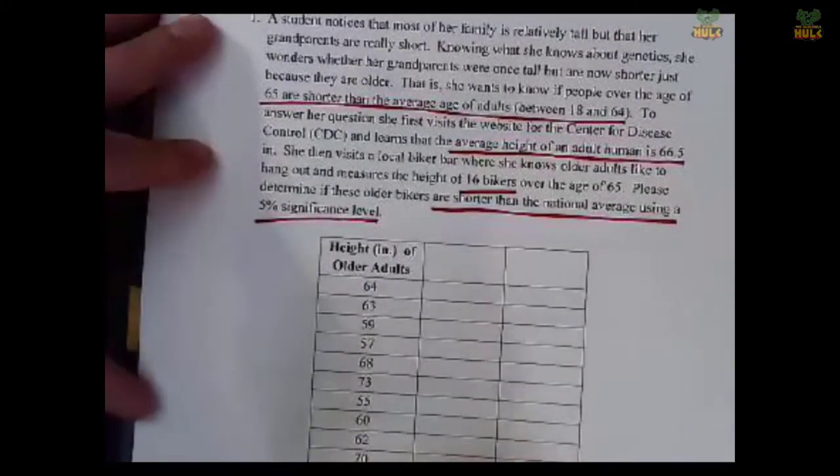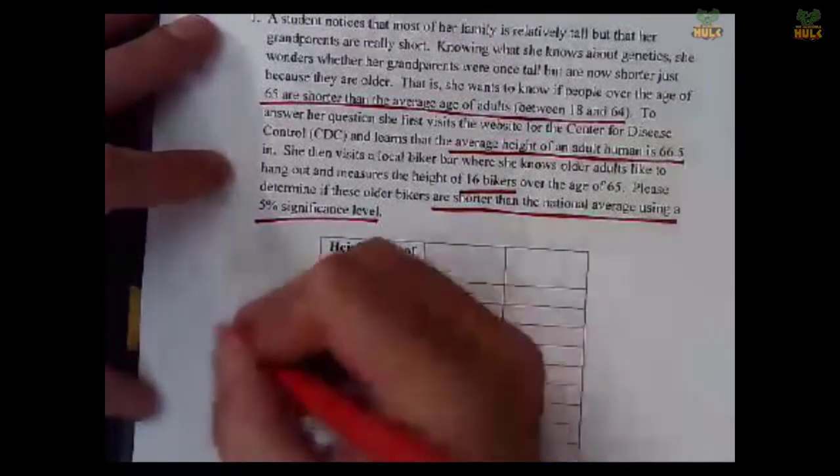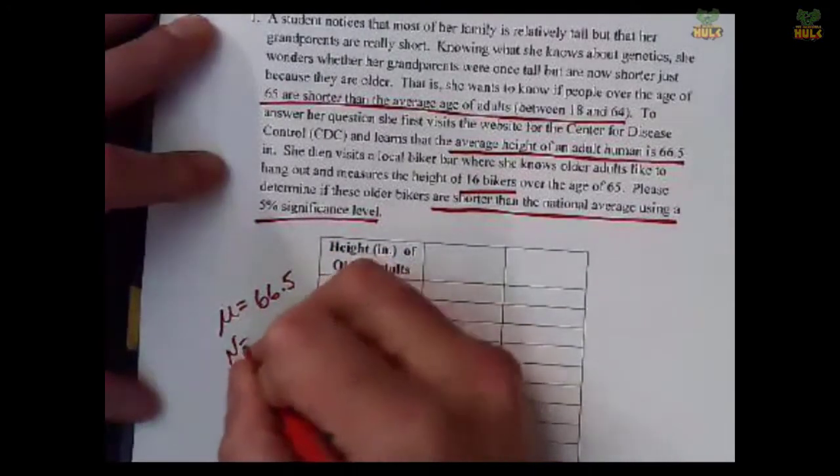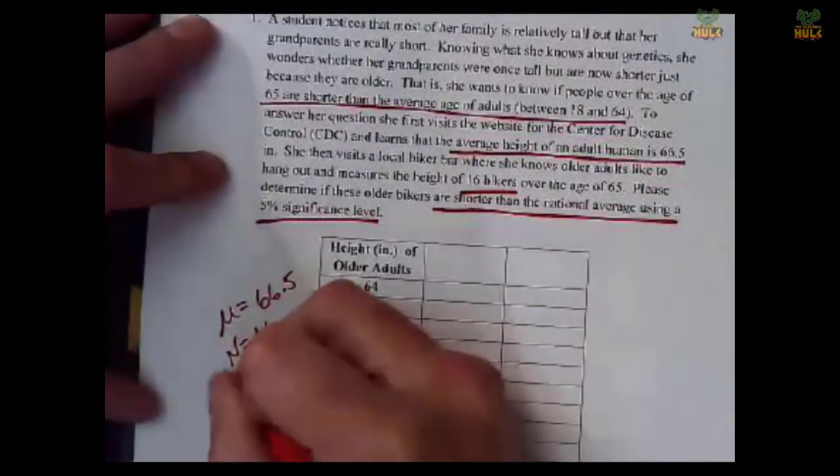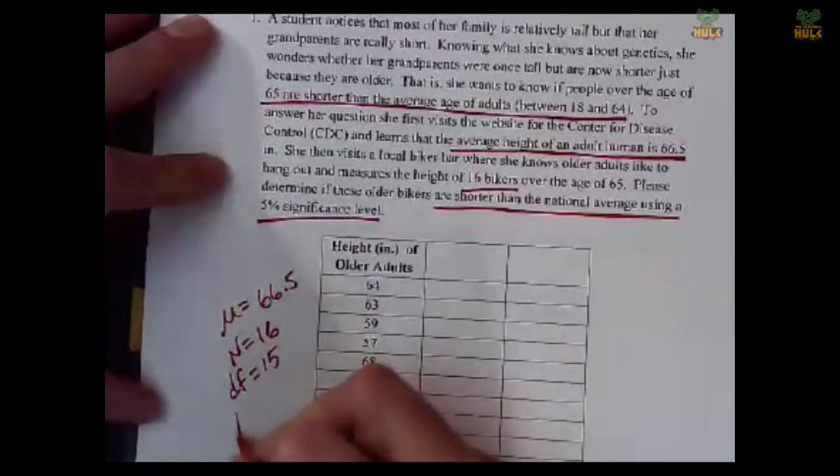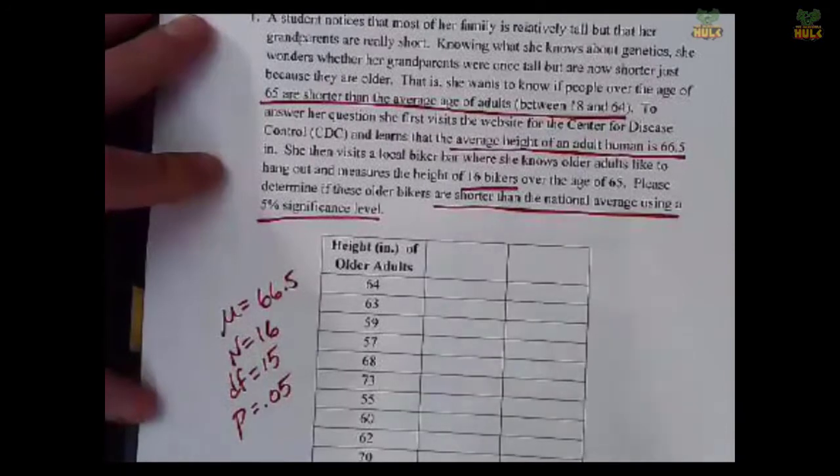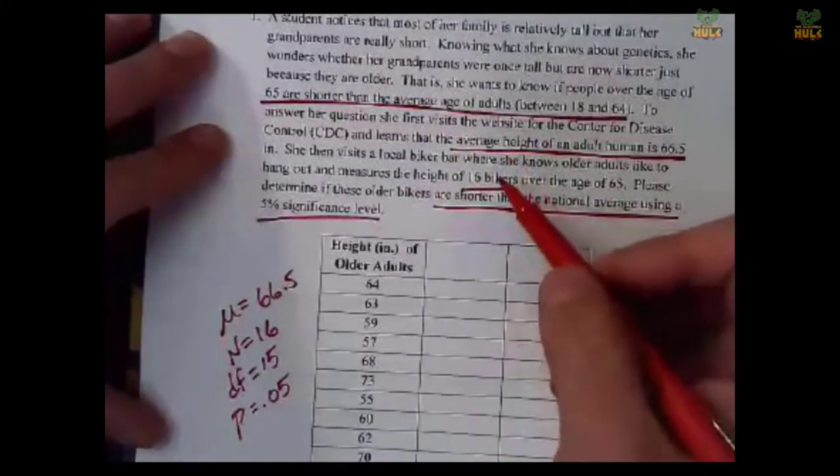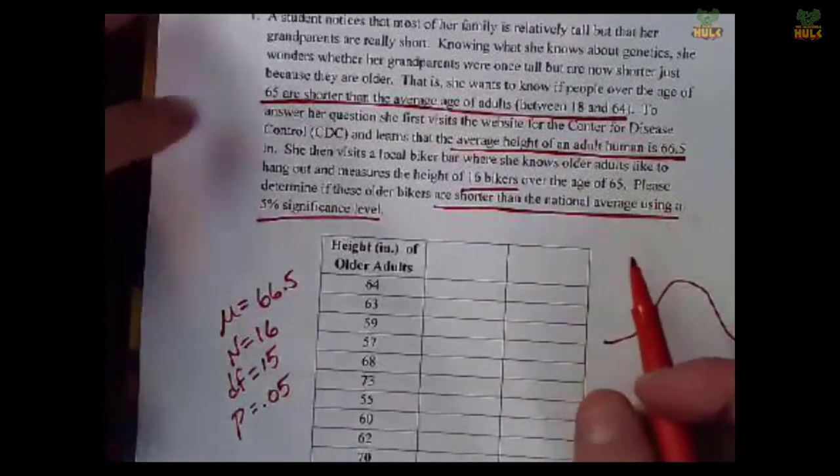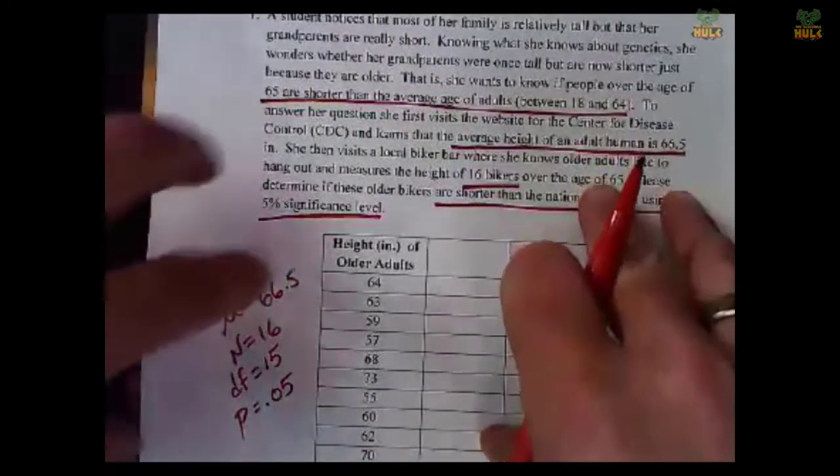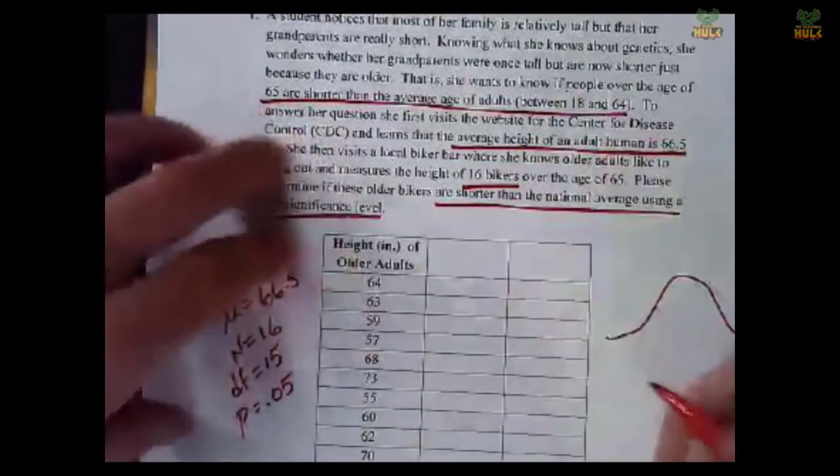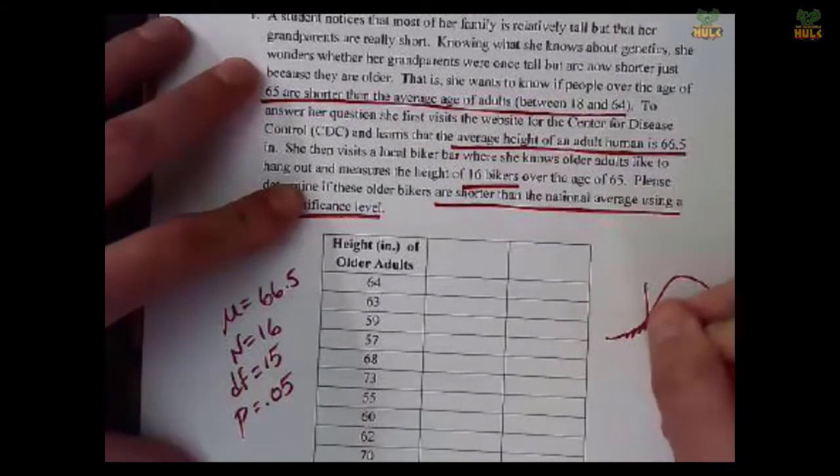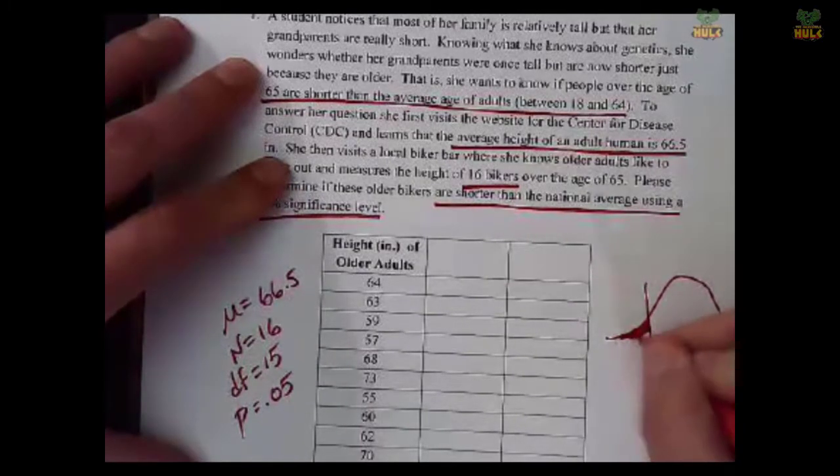So she's got a sample now. It says, please determine if these older bikers are shorter than the national average using a 5% significance level. So what do we know? Well, we know the prediction is directional. We'll get to that in a second. What values do we know? We know the CDC says adults are 66.5 inches. We know her sample size consists of 16 older adults at the biker bar. So the degrees of freedom then would be 15 for this sample. And we know that we're going to be testing our hypothesis at a 0.05 level. Because it's a directional hypothesis, we know that 5% then will be in just one tail. Which one though? Well, again, let's look to see the prediction. The prediction says shorter than the national average, which means it's predicting the sample size will be a lower number than the population value, which means the mean of X minus the population mean will result in a negative value.